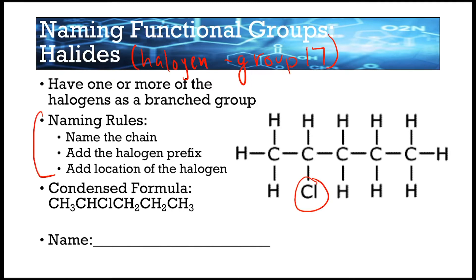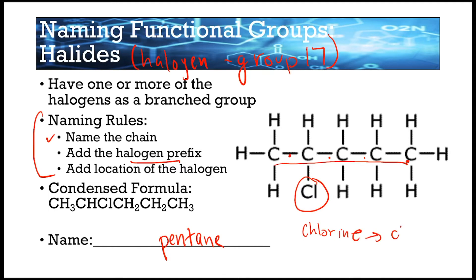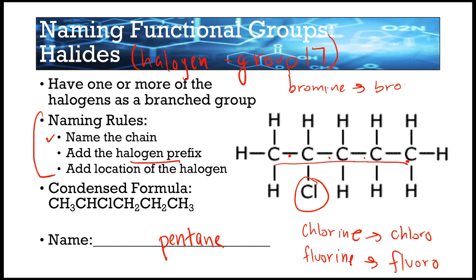We're going to name it using these rules. The first step, just like we've done so far, is name the chain. We have five carbons, so we name that pent, and with single bonds between those, we have -ane. The second step is to add the halogen prefix: chlorine becomes chloro, fluorine becomes fluoro, bromine becomes bromo, and iodine becomes iodo.